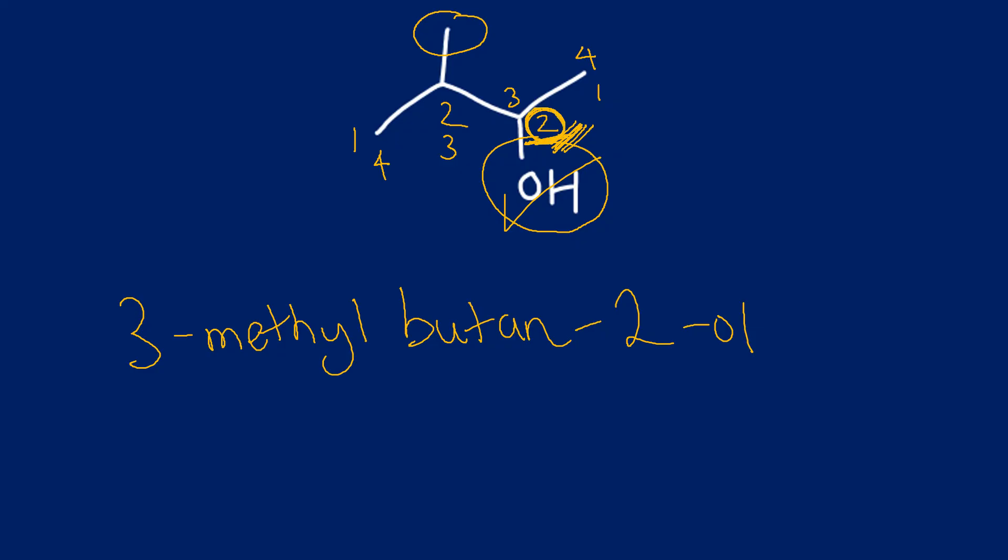So the functional group number must be the lowest possible number. So butan-2-ol, that leaves the methyl on the three carbon: 3-methylbutan-2-ol.